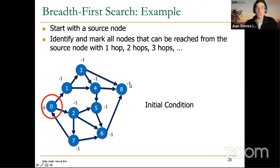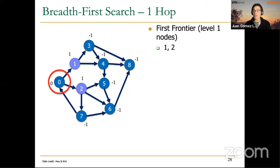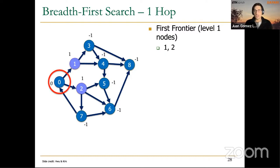In the first iteration of the algorithm, we visit the direct neighbors or successors of node 0. For this particular graph and source node, the first neighbors are nodes 1 and 2. We call these the frontier — after every iteration, we have visited a new set of nodes that are neighbors of previously visited nodes that have not yet been visited. Nodes 1 and 2 are neighbors of node 0 and were not visited before, so they form the first frontier.